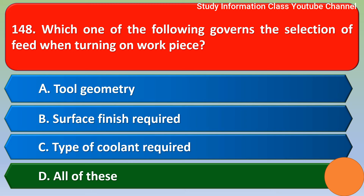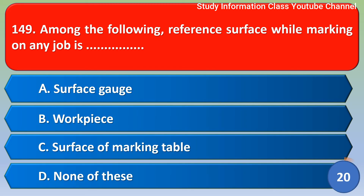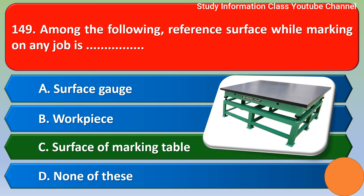Next question: Among the following, the reference surface while marking on any job is — Option A: surface gauge, Option B: workpiece, Option C: surface of marking table, Option D: none of these. The correct answer is Option C, surface of marking table.